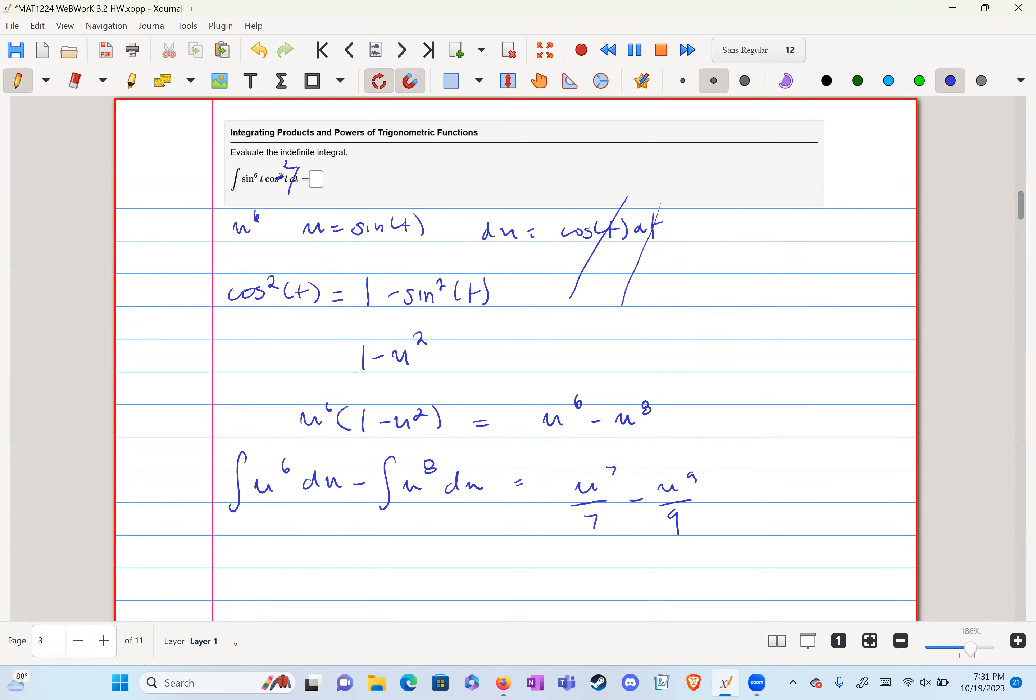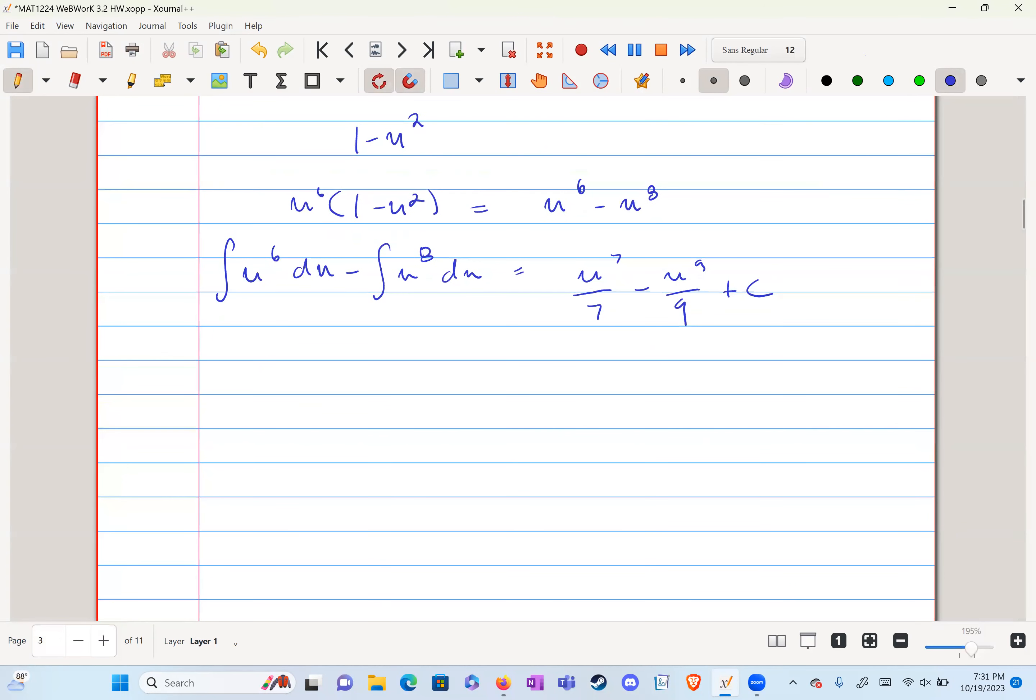And we plug back in our u. We get sine to the power of 7t over 7 minus sine to the power of 9t over 9 plus c. And that is our answer for question 3.